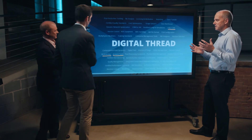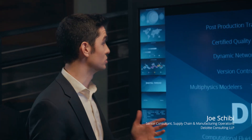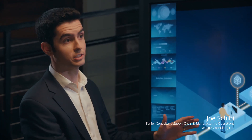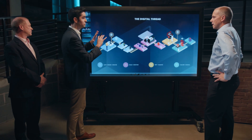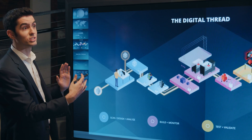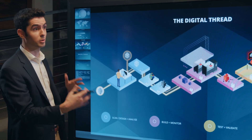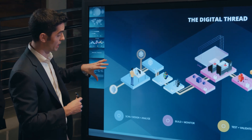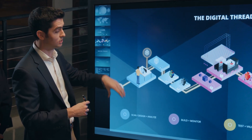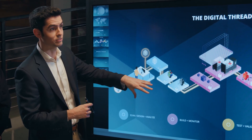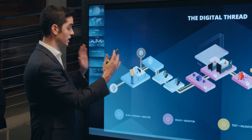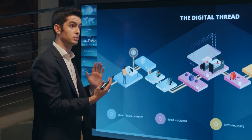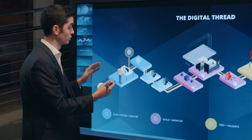Draw a picture for me. Sure. What we like to do is jump into a simple graphic of how to visualize this. This is our standard digital thread graphic across four distinct phases to help internalize what this looks like. We have scan, design, and analyze; build and monitor; test and validate; and deliver and manage. Scan, design, and analyze are some of those upfront steps that you saw during your journey.